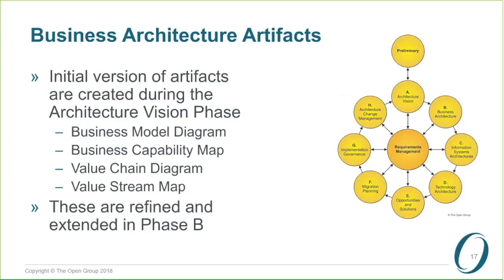An important change in business architecture: in version 9.1, we start to talk about business architecture mainly in phase B. The business architecture folks have said you cannot define an architecture vision without doing some business architecture work, because that has an impact on the plan you're going to put in place. So we start to create the business architecture artifacts in the Architecture Vision phase — Phase A — and then we refine, extend, and build on them in the business architecture phase. There are detailed guides that support this.